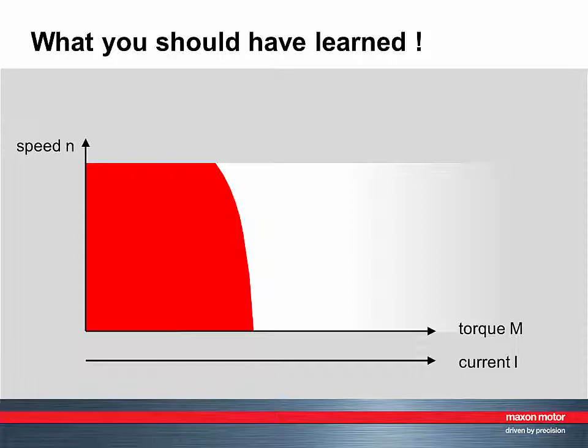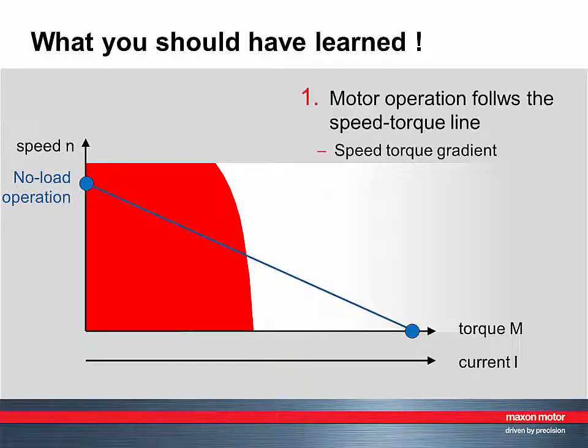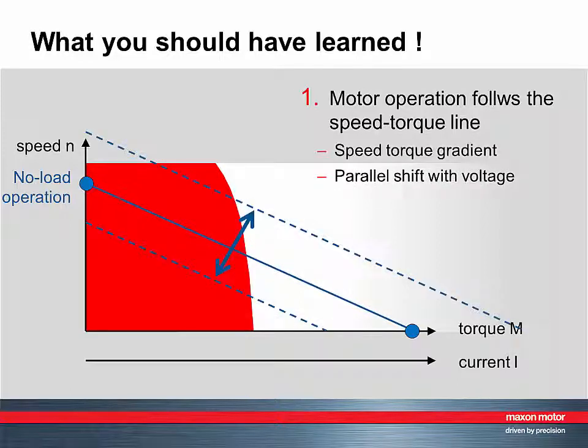Now what you should have learned in this chapter 2. First of all, motor operation follows the speed torque line. The speed torque line is characterized by the speed torque gradient. The speed torque line shifts in parallel with voltage.